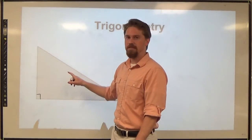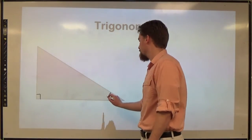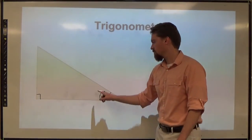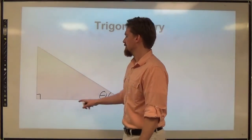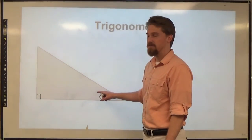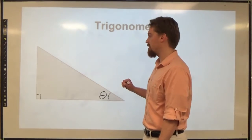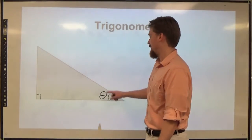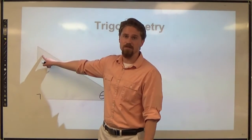I'm going to label one angle with the symbol theta. Now, once we know we have a right triangle and we have another angle, all the angles in a triangle have to add up to 180 degrees. So by knowing that one of them is a right angle and knowing one other angle, whatever it is, I have to know what this one is.